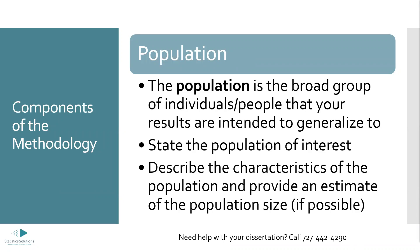Next, we'll talk about the population and sample sections. A lot of students get confused here because the difference between population and sample can be unclear. The population is the broad group of individuals that your results are intended to generalize to. For example, if you're doing a study in nursing, your general population might be all registered nurses in the United States. If you're doing a study in education, it might be elementary school teachers in the US. You want to state that general population and, if possible, describe its characteristics and provide an estimate of the population size.